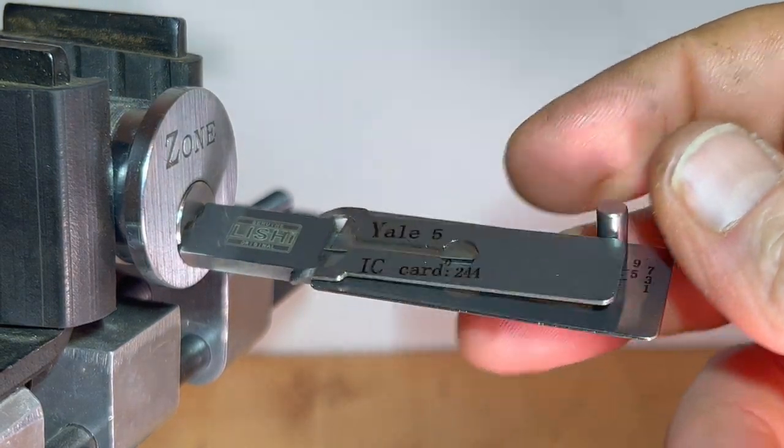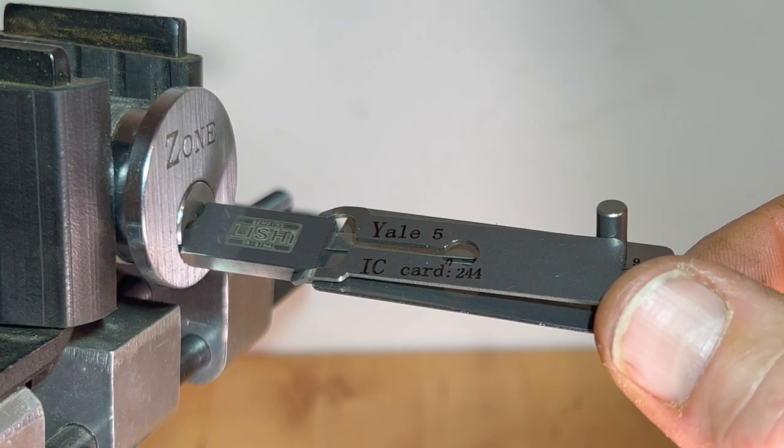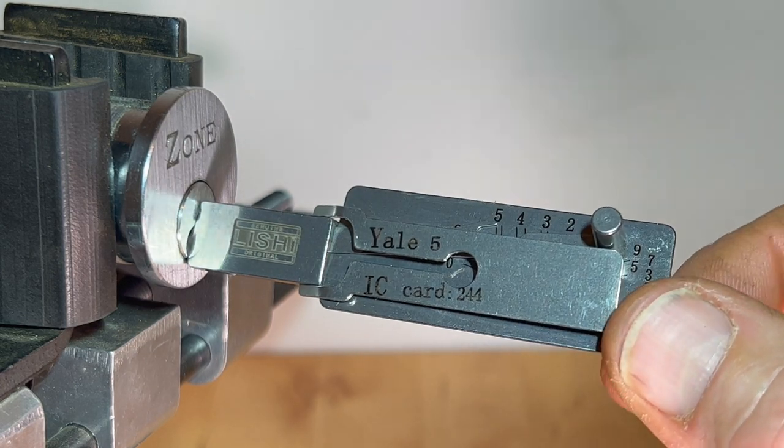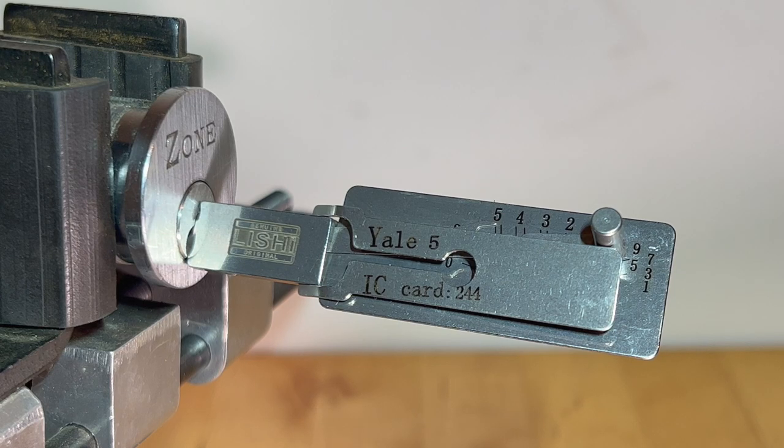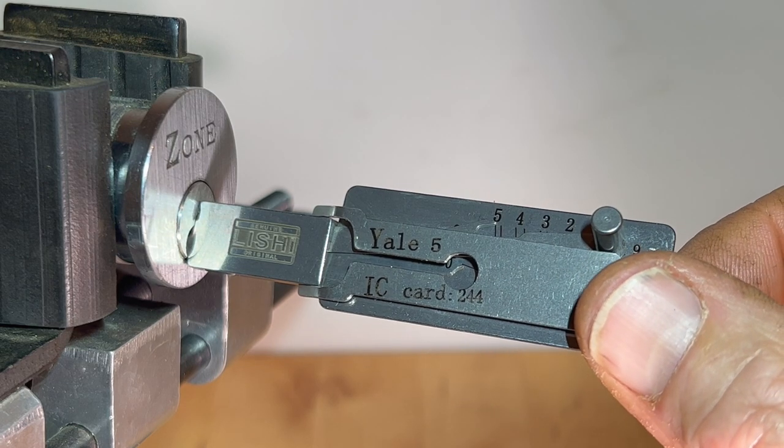So we had a bit of a mixed bag there—pins resetting, dropping, things oversetting. What you do when they're overset is obviously remember where the other pins have set, and then you can go back to those fairly quickly. But anyway, so that's that Zone opened using the five-pin Yale Lishi copy. Okay, I hope that helps.